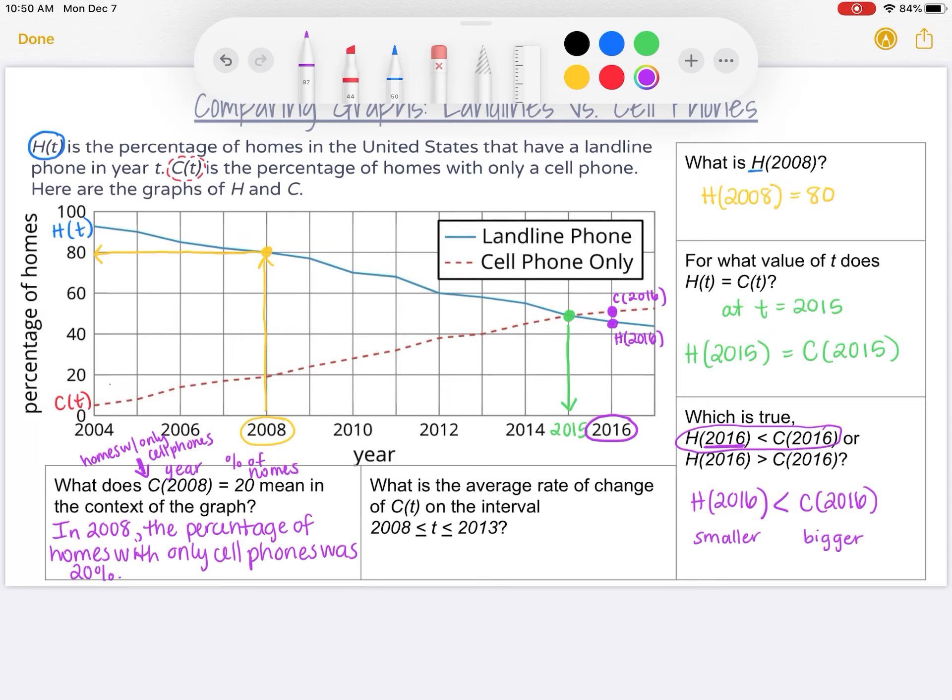The last question is, what is the average rate of change of C(t) on the interval 2008 is less than or equal to t is less than or equal to 2013? First of all, I know I'm looking at my red dotted line for this, and it's asking me for the average rate of change between 2008 and 2013. So I should probably start by plotting the points on the red dotted line at 2008 and 2013. So if I go to 2008 and I go up to my red line, here's the point there. And then if I go to 2013, which is between 2012 and 2014, I plot another point there.